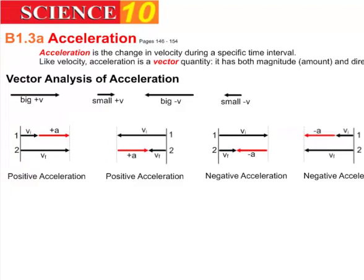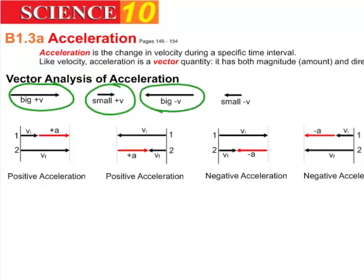I want to show you how acceleration works, but first pay attention to these symbols. This represents a large positive velocity — the arrow going towards the right is positive and it's big. This fellow here is a small positive velocity; he's going to the right but it's a much smaller arrow. Contrast this with a big velocity in the negative direction — heading towards the left — and a small negative velocity, also heading left but a much smaller amount.